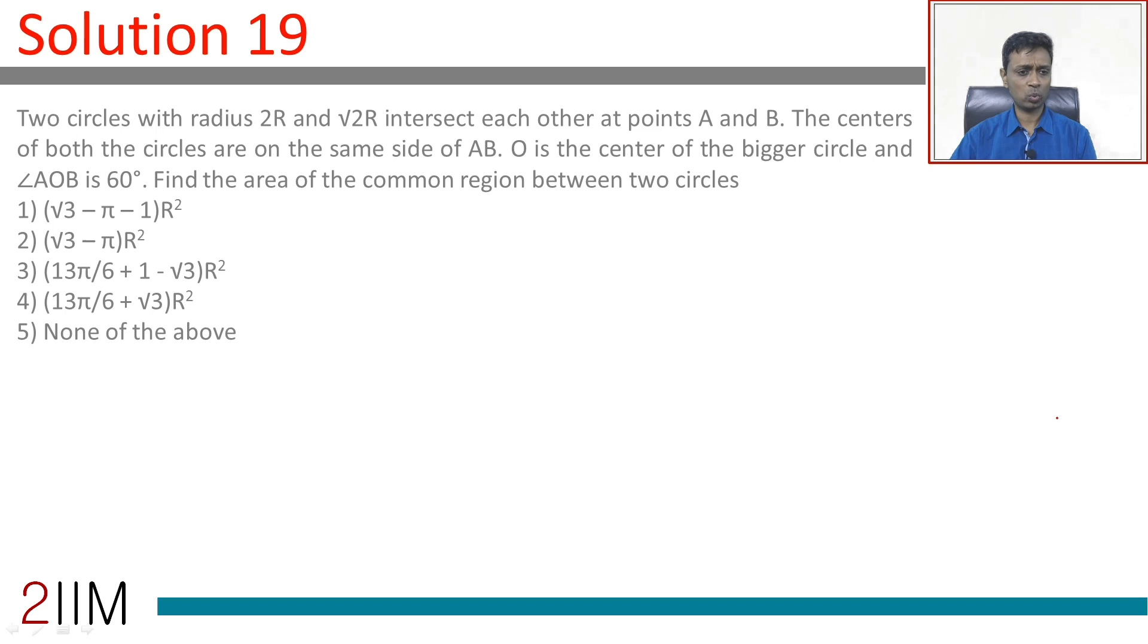Let us see if that matches with one of the choices that we have. 13 by 6 plus 1 minus root 3 R square, that is the answer. Absolutely wonderful question. One question like this, you can get all your ideas in mensuration crystal clear. Anything you do with circle, sector, segment, you are through.